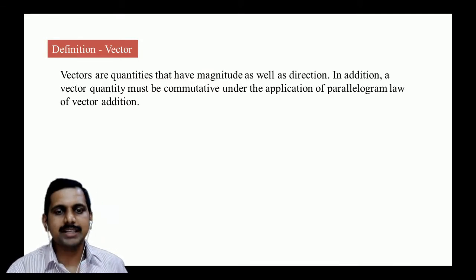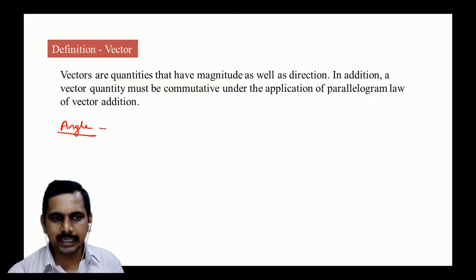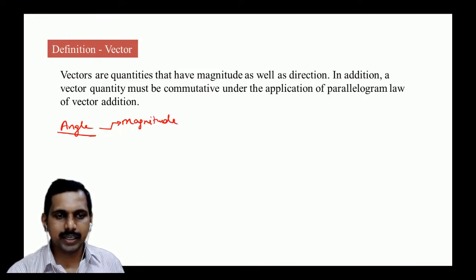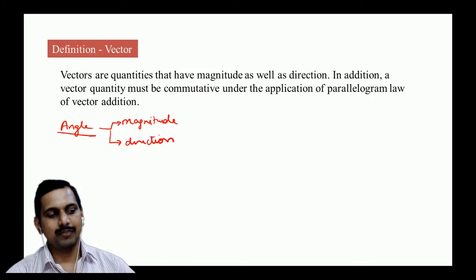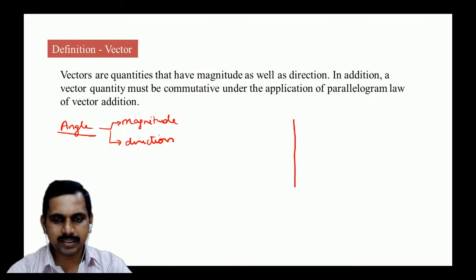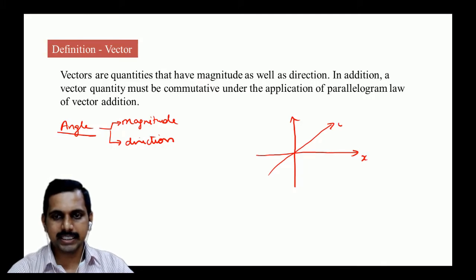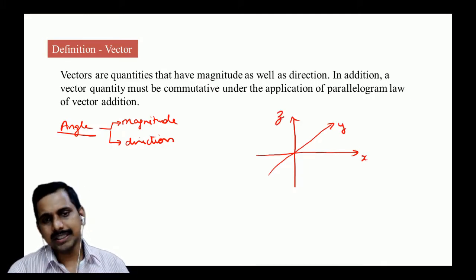One example that does not qualify as a vector is angle, which has both magnitude and direction but is not a vector. The reason is that it is not commutative under addition. If we have x, y, z directions — let us check whether the coordinate system is proper.